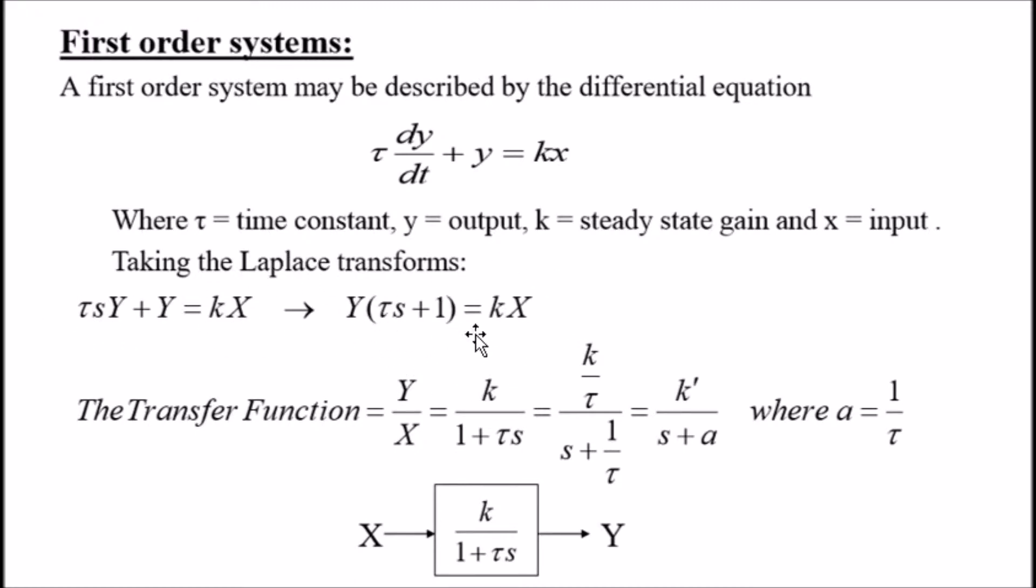Bottom line is we need to know k, which in this case would be the steady state gain, and tau would represent the time constant. Okay, so let's go back to our problem in particular.